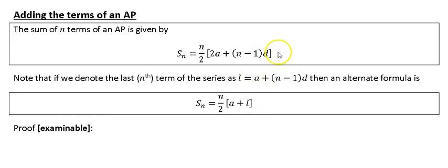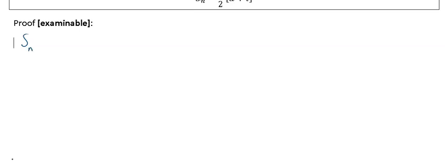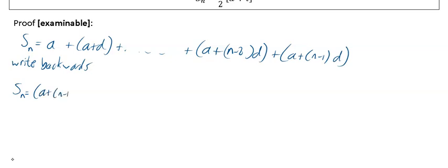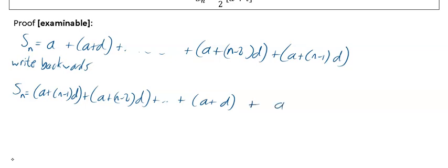Now we'll look at the proof for the sum formula — this can be examined so we need to know it. We write the series out: A + (A + D) + ... + (A + (N−2)D) + (A + (N−1)D). Then we write the same series in reverse: (A + (N−1)D) + (A + (N−2)D) + ... + (A + D) + A.